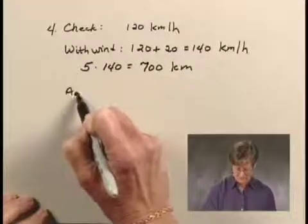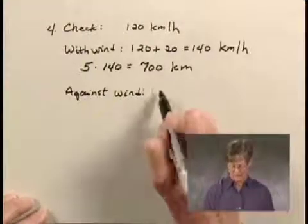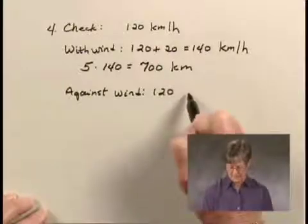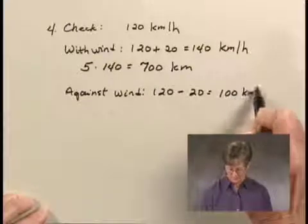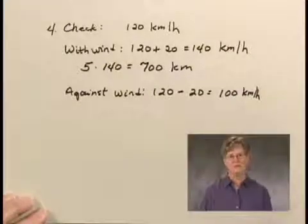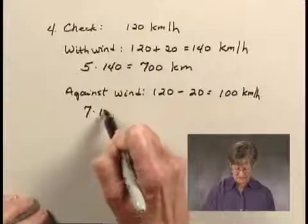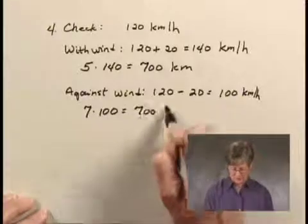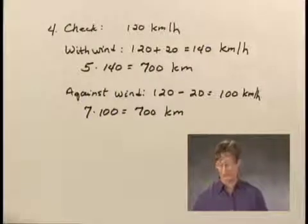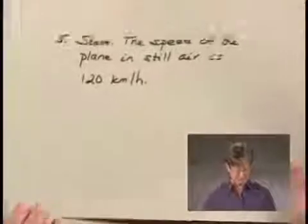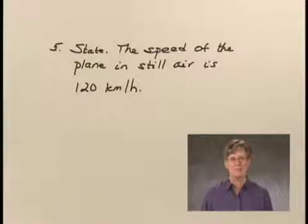Against the wind, its speed is 120 minus 20, or 100 kilometers per hour. The plane travels that distance in 7 hours, so the distance is 7 times 100, or 700 kilometers. Since both distances are the same, the solution checks out. The speed of the plane in still air is 120 kilometers per hour.